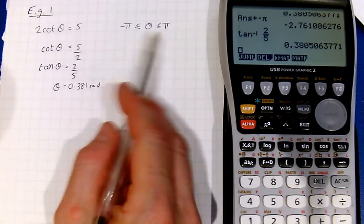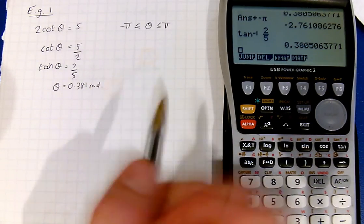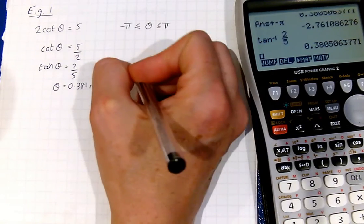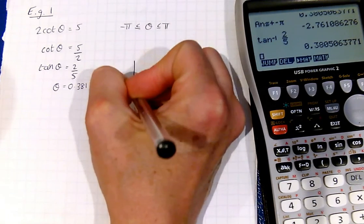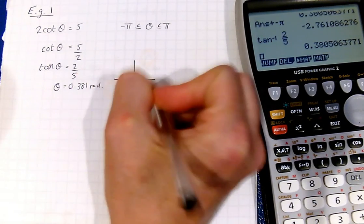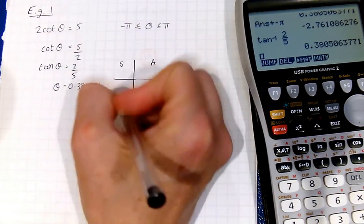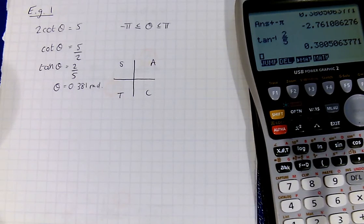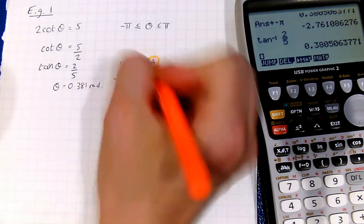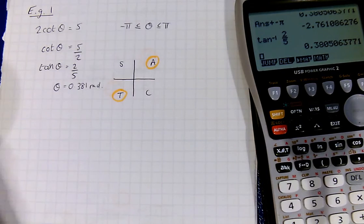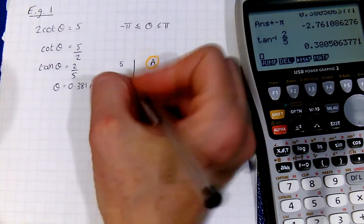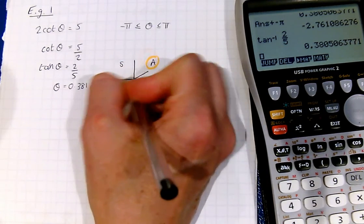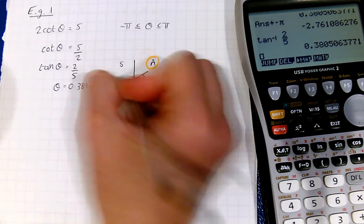Now we look at the range of values. So we need all solutions in this range, so I'm going to start with a cast diagram. And I know that tan is positive, so I'm going to select those quadrants. And draw my angles in there that are always made with the x-axis.